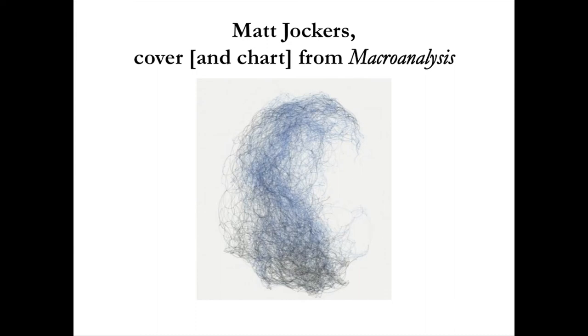To give you a sense of what that may mean, this is the last chart of Mark Jockers' Macroanalysis — a chart he obviously liked, and his publisher liked well enough to put it on the cover of the book. This is a chart which consists of 3,000 nodes. Each node is a novel, and there are 165,000 links between these nodes established on the basis of about 600 distinct features. The nodes are virtually invisible.